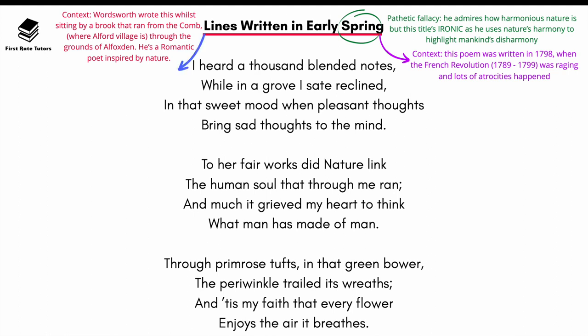Structurally, this poem is written in six stanzas which are quatrains — four lines in each stanza. You can argue that this structure emphasizes the constant regeneration of nature. The poem also has an ABAB rhyme scheme. Now I'm going to read through the first three stanzas.